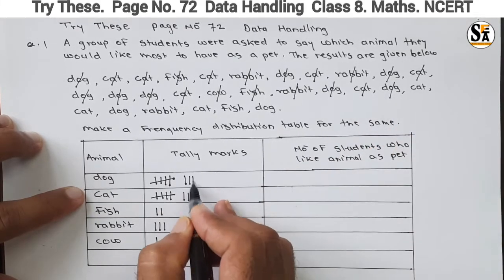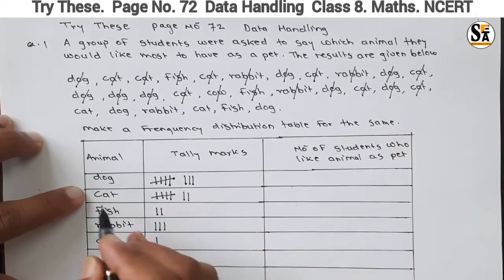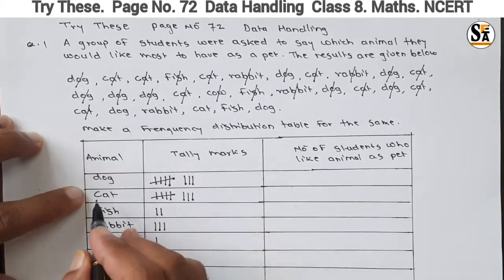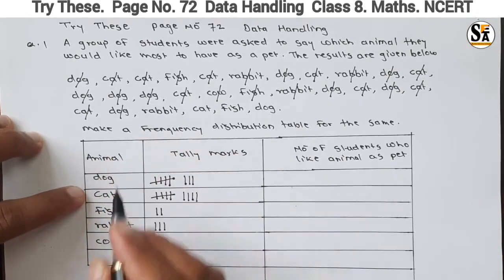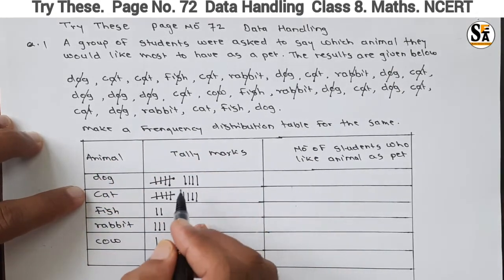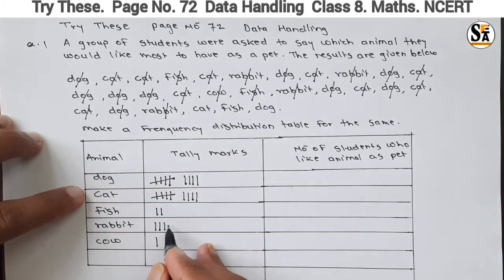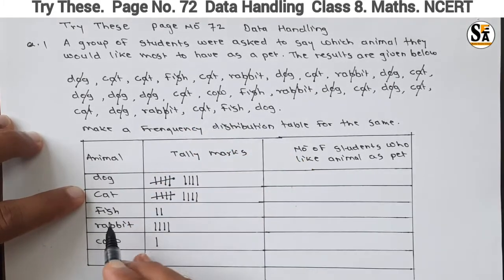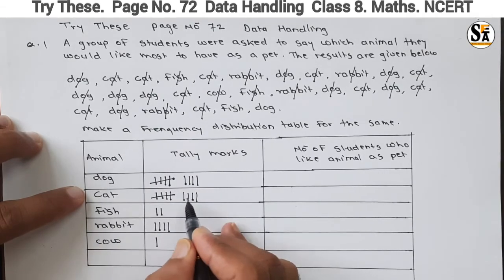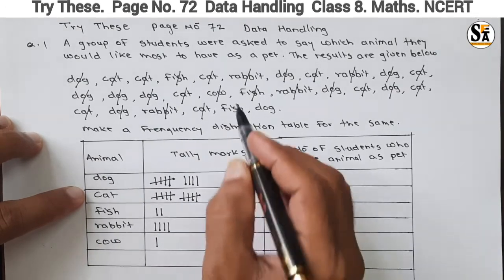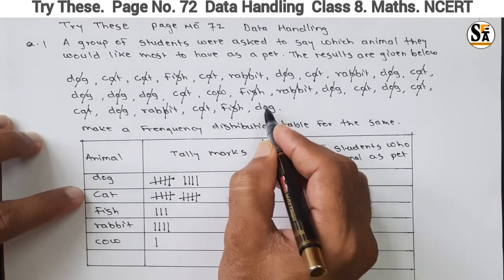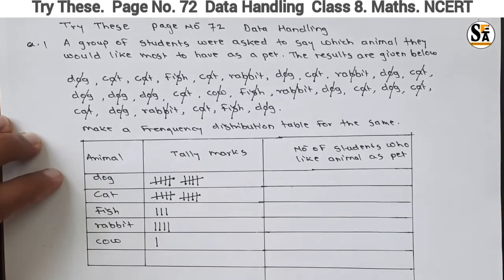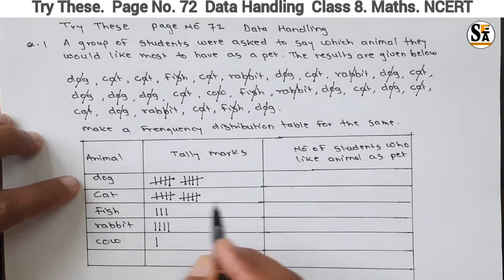One more for dog, one more for cat — fourth tally mark for cat, completing the second group of five. Then next dog — one more tally mark for dog. And for rabbit — one more for rabbit. Then cat — one more for cat, making another group. Then fish — third tally mark for fish. And last one — dog again, one more for dog. So these are all the tally marks for each animal.